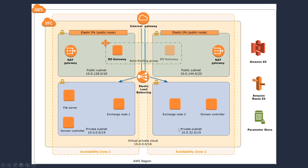These Exchange servers are configured into an Exchange Database Availability Group, and we're using a file server as a third witness for quorum arbitration. We also follow the best practice of separating private internal resources from the internet by creating private subnets, with public subnets containing something called an RD Gateway — think of it as a jump box to get into the environment. This is what the QuickStart creates so you can get hands-on experience, and the deployment guide walks through how to set it up.